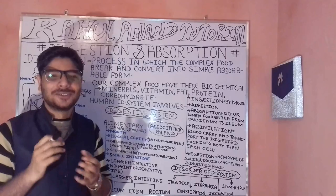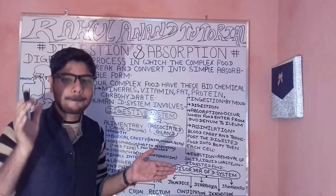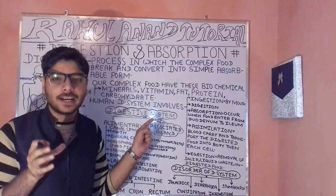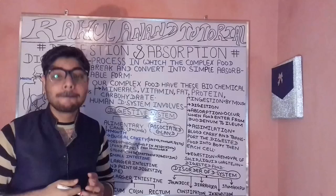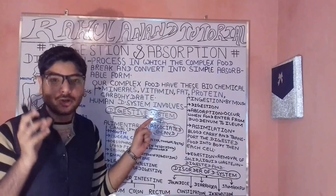So you know about complex food — these are the organic as well as inorganic food substances which we take from our natural habitats. When broken down into simpler particles, we get carbohydrates, fats, and proteins.